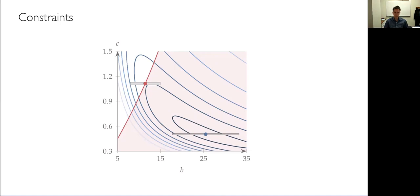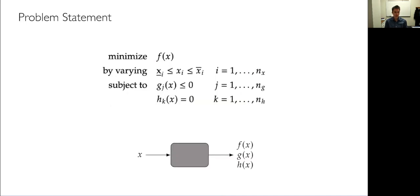There are some good life parallels with that as well. Here's how we define the optimization problem mathematically. We define f as the objective function. We use g for inequality constraints — there could be many, g₁ through g_ng. We use h as the notation for equality constraints, and there could be many of those too. The design variables are called x, and in general there are many — one-dimensional problems are not interesting.